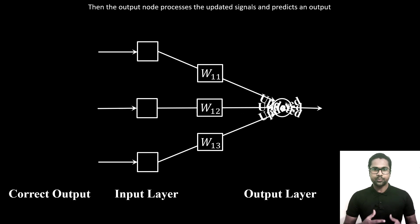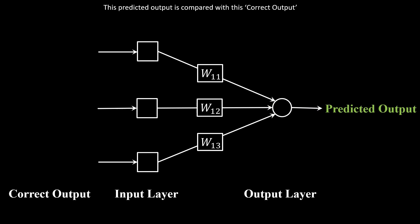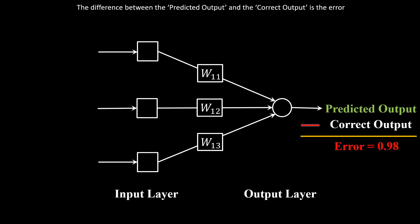These weights update the input signals. Then, the output node processes the updated signals and predicts an output. This predicted output is compared with this correct output.